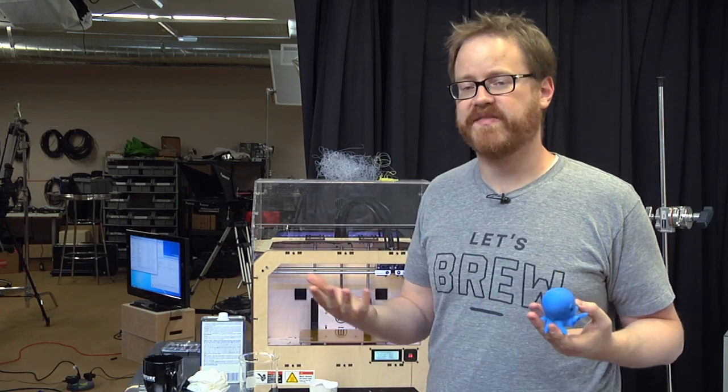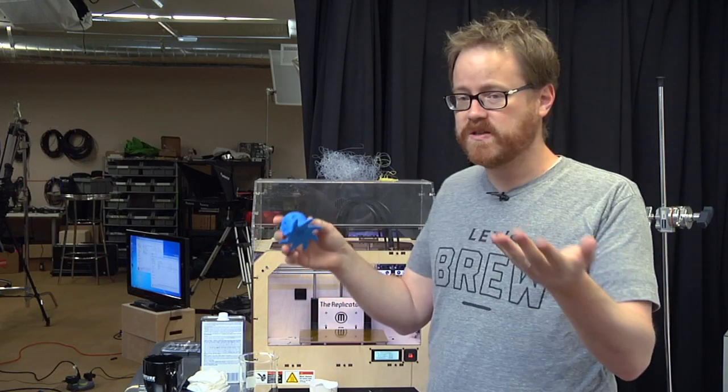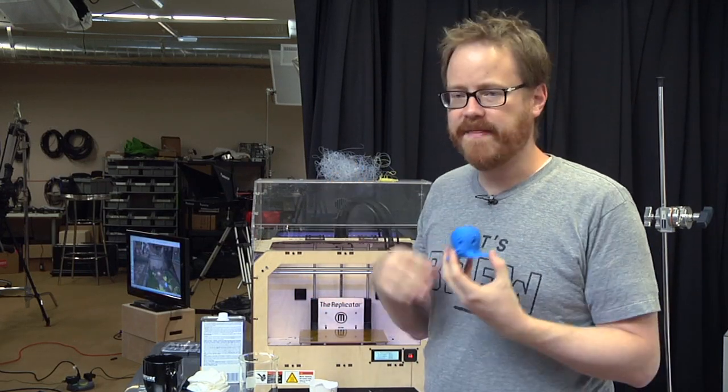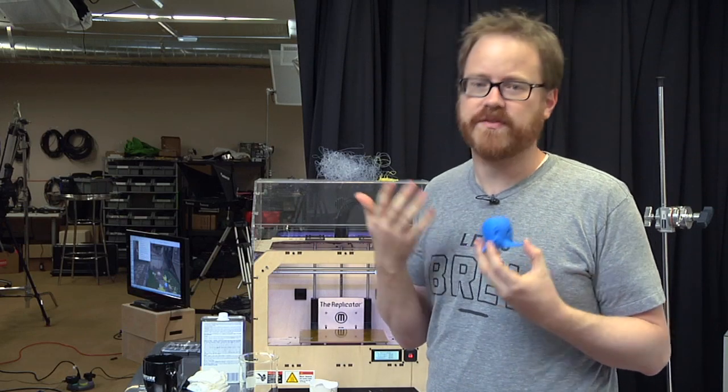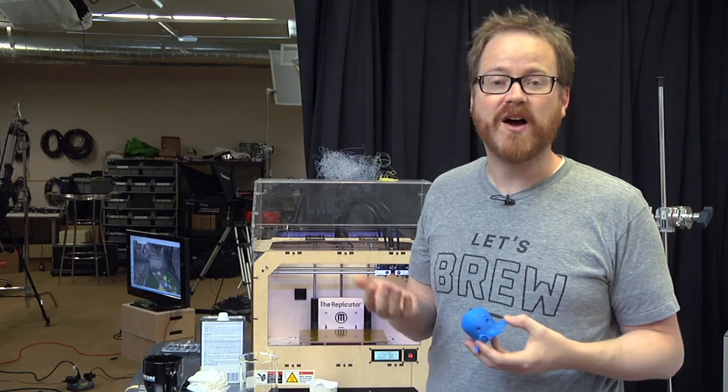What happens is the acetone vaporizes, becomes a gas, and then it ensconces itself around the model, and that's just enough to soften the surface enough that it kind of flows a little bit and becomes soft and very shiny.